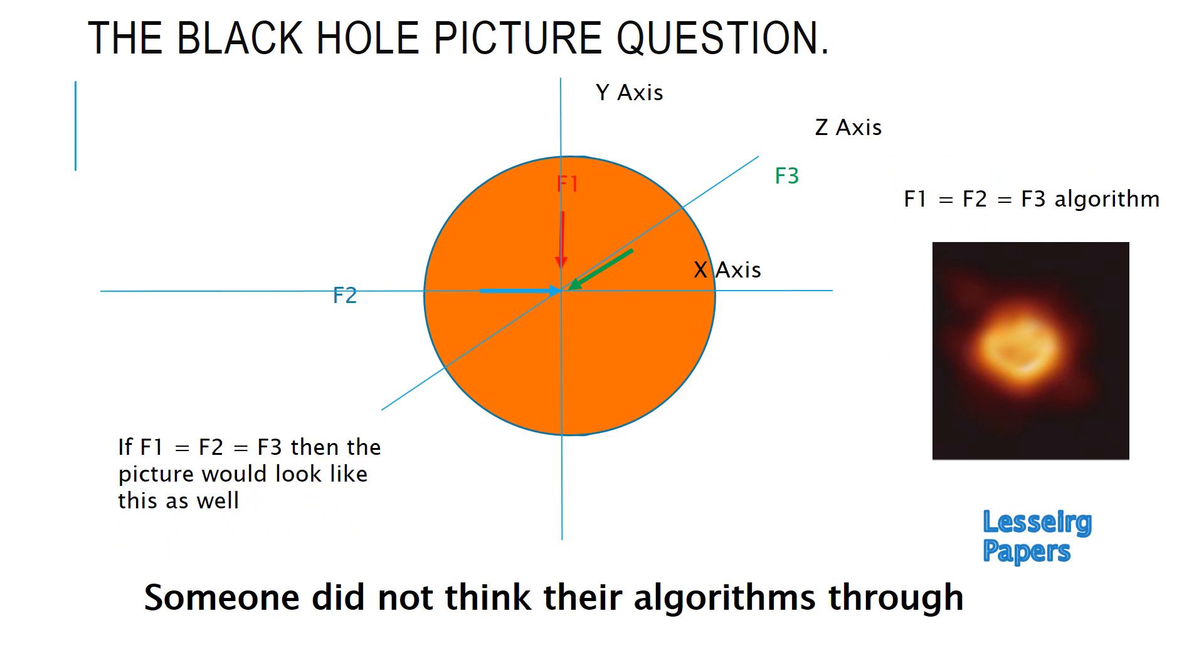Of course we can do that with all three dimensions. So if F1 equals F2 equals F3, the picture would look like an orange ball again. Using my special F1 equals F2 equals F3 algorithm, I get a picture that looks like the sun without a black hole in it.